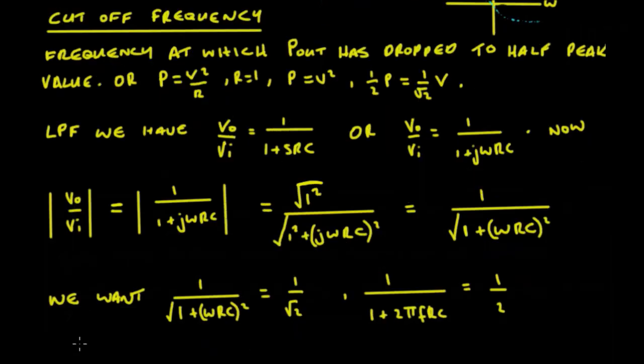We want to have 1 upon root of 1 plus omega R C squared. But what is it we want? We want the 1 upon the root of 1 plus omega R C squared to equal 1 upon root 2. So that's going to be the half power point. So that's going to be 1 upon 1 plus, and omega is 2 pi F, so it's going to be 2 pi F R C. Now the square and the square root just cancel out, so that is going to equal a half.